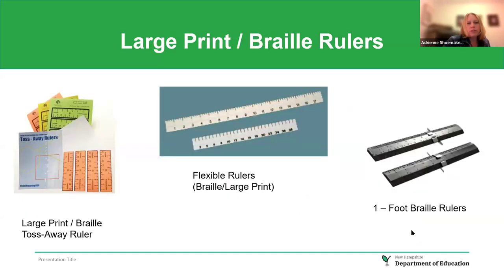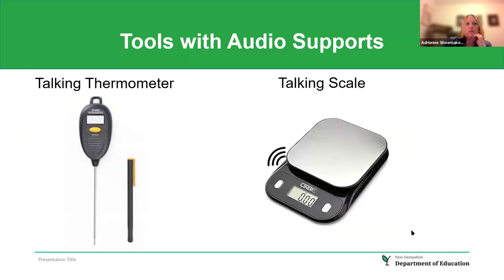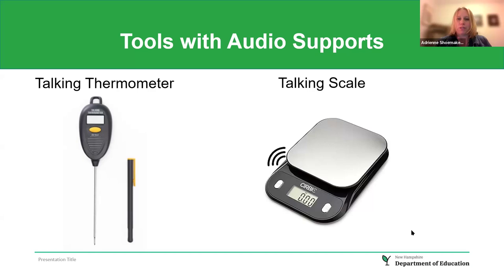Large print and Braille rulers from APH include large print Braille toss-away rulers, a flexible ruler with both large print and Braille, and a one-foot Braille ruler with a slide for accuracy in measuring. For tasks in math or science, talking tools are also available — talking thermometers, talking scales, and talking measuring tapes. There's likely some type of talking tool for nearly any task a student needs to complete.